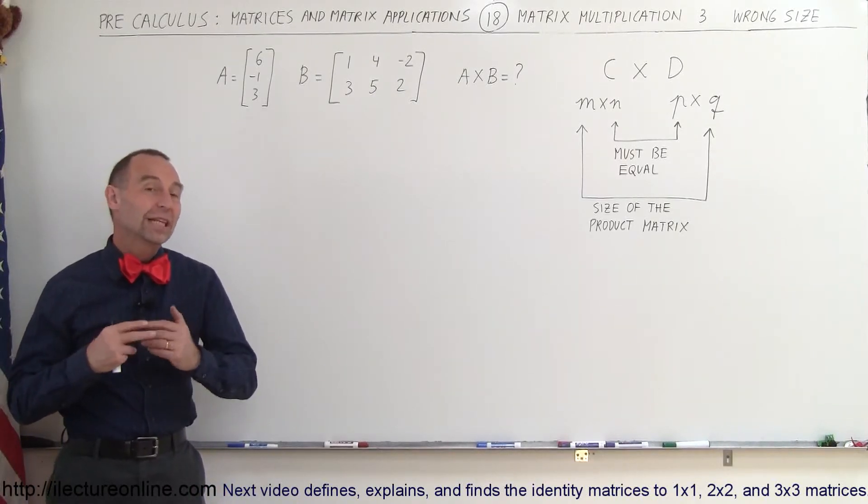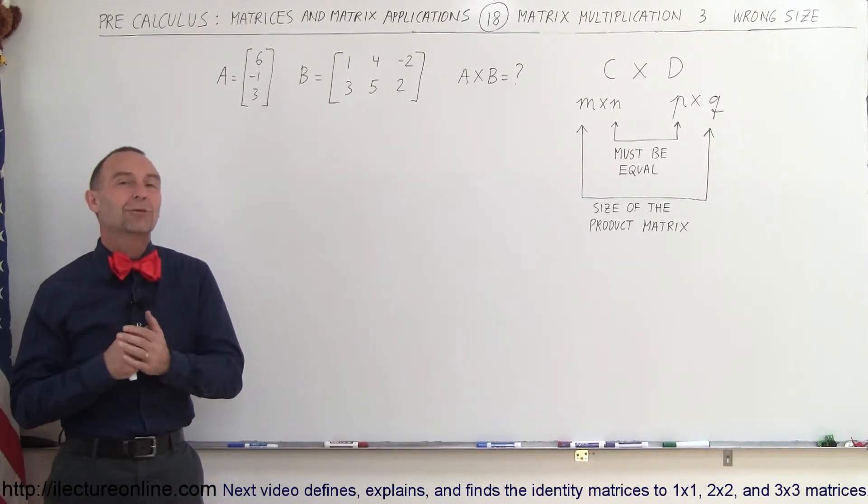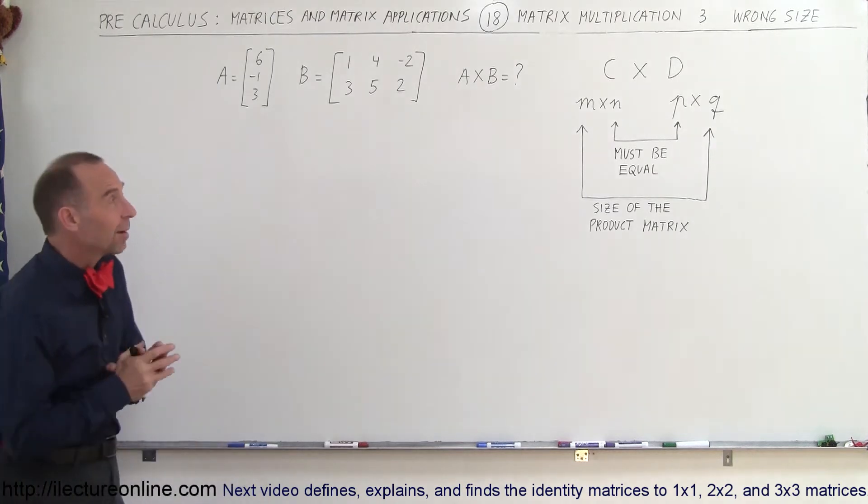Welcome to ElectronLine, and now we're going to see an example where we cannot multiply two matrices together because they are the wrong size combination.